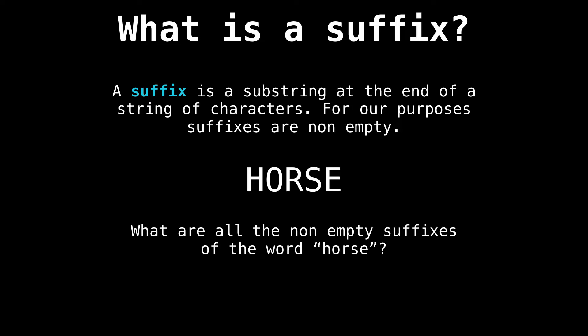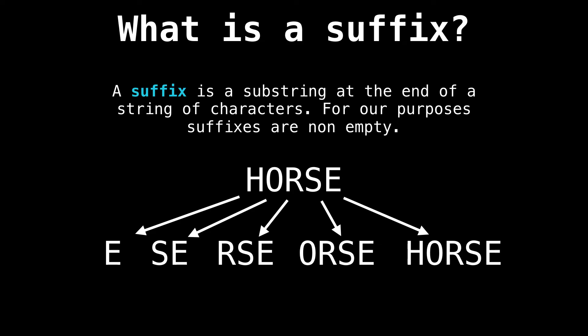For example, if we ask ourselves what all the possible suffixes of the string 'horse' are, we are able to come up with five unique suffixes: e, se, rse, orse, and so on.